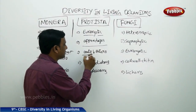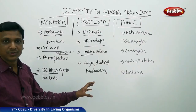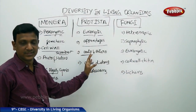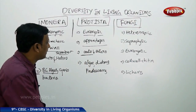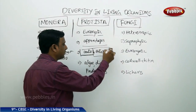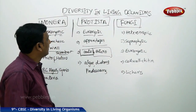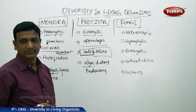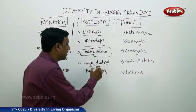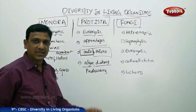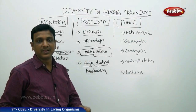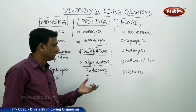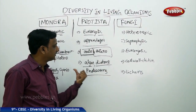Regarding their mode of nutrition, some Protista are autotrophic and some are heterotrophic. Certain protists have photosynthetic pigments to carry out photosynthesis and prepare their own food; others do not. Examples of Protista include algae such as Chlamydomonas, Spirogyra, and diatoms — very minute organisms found in water. Organisms like Amoeba, Euglena, Paramecium, and Chlamydomonas are all protozoans that come under Protista.